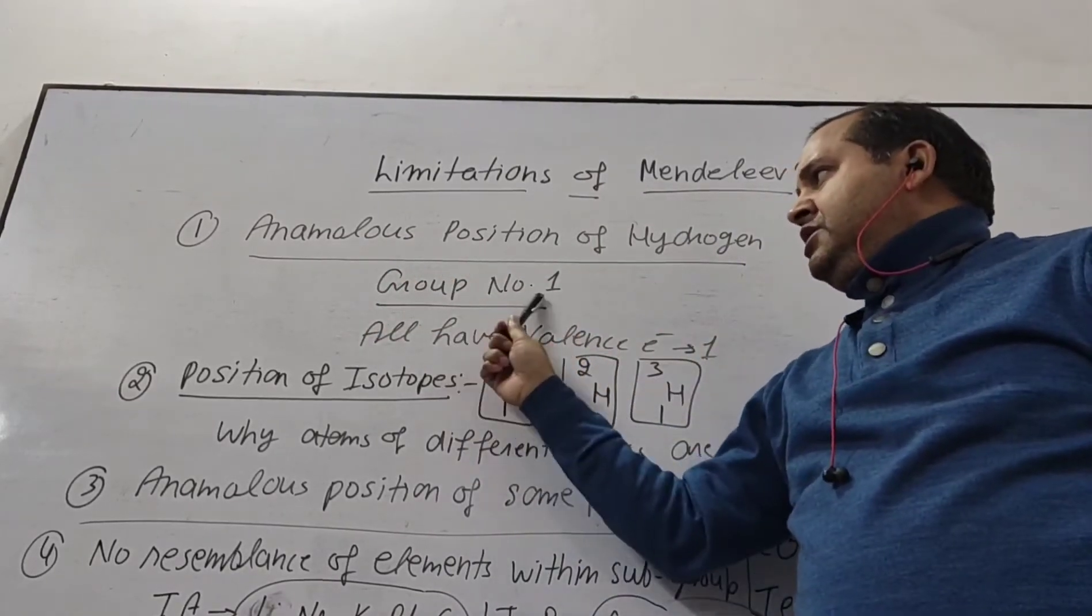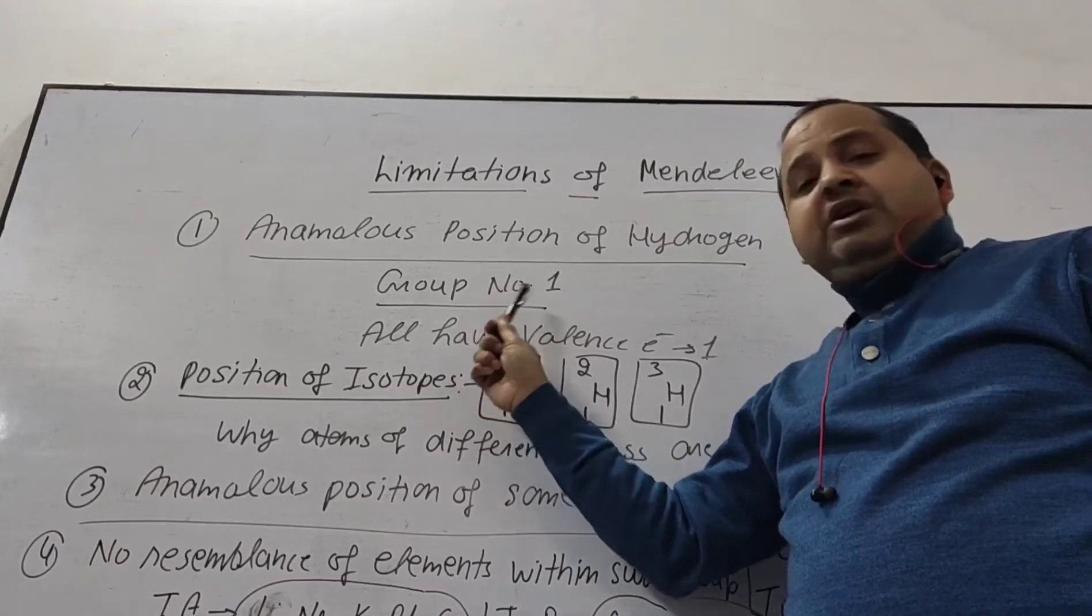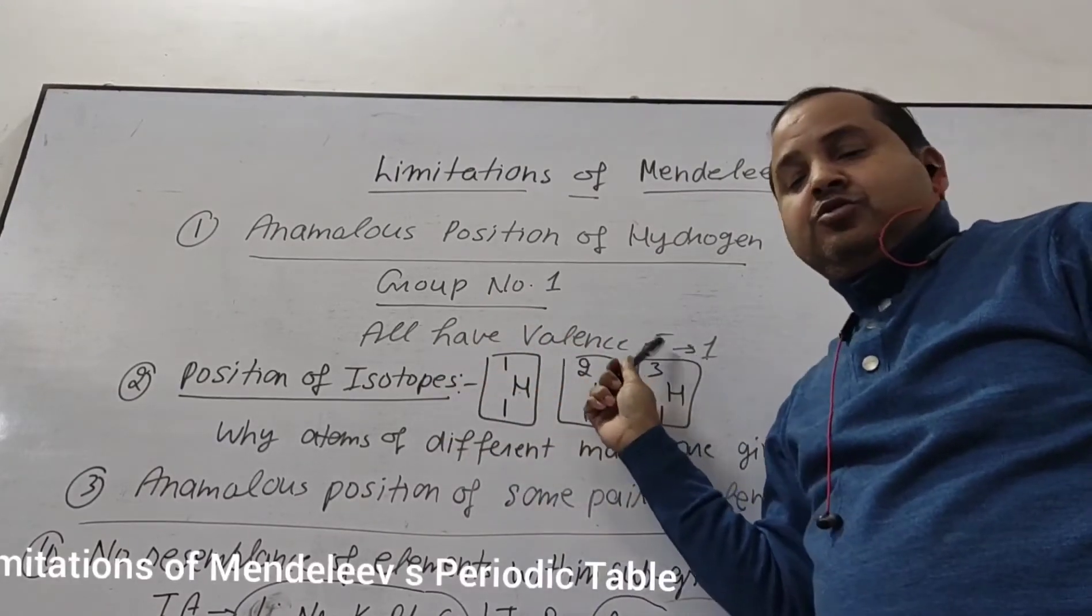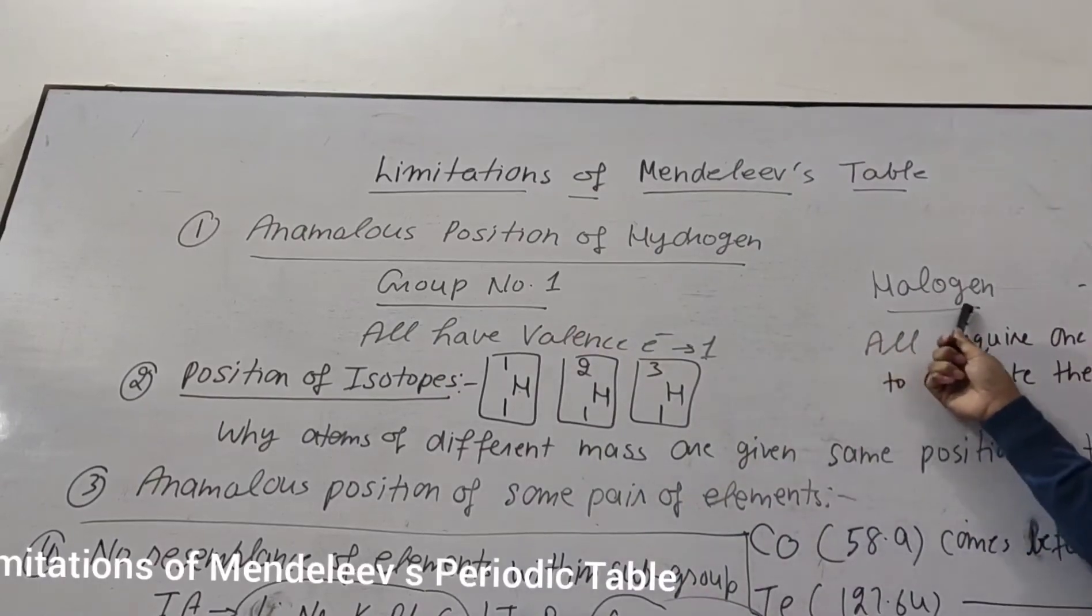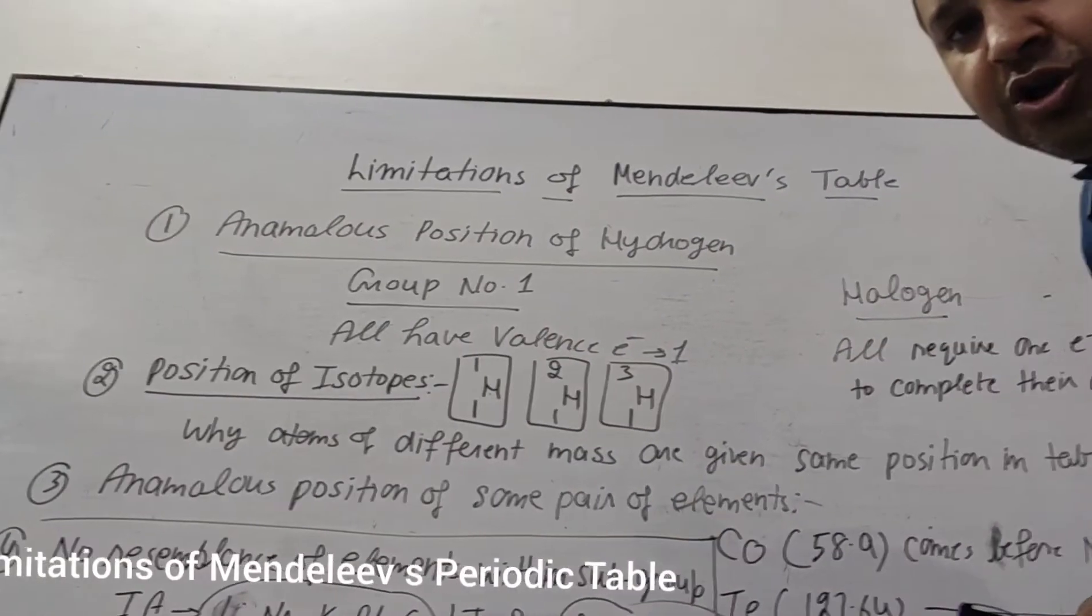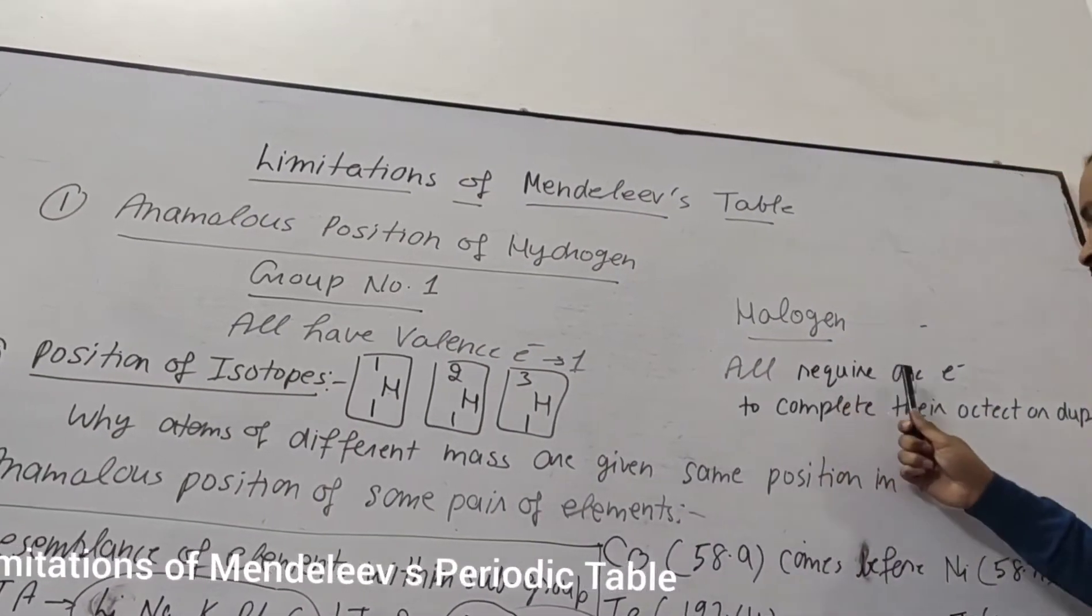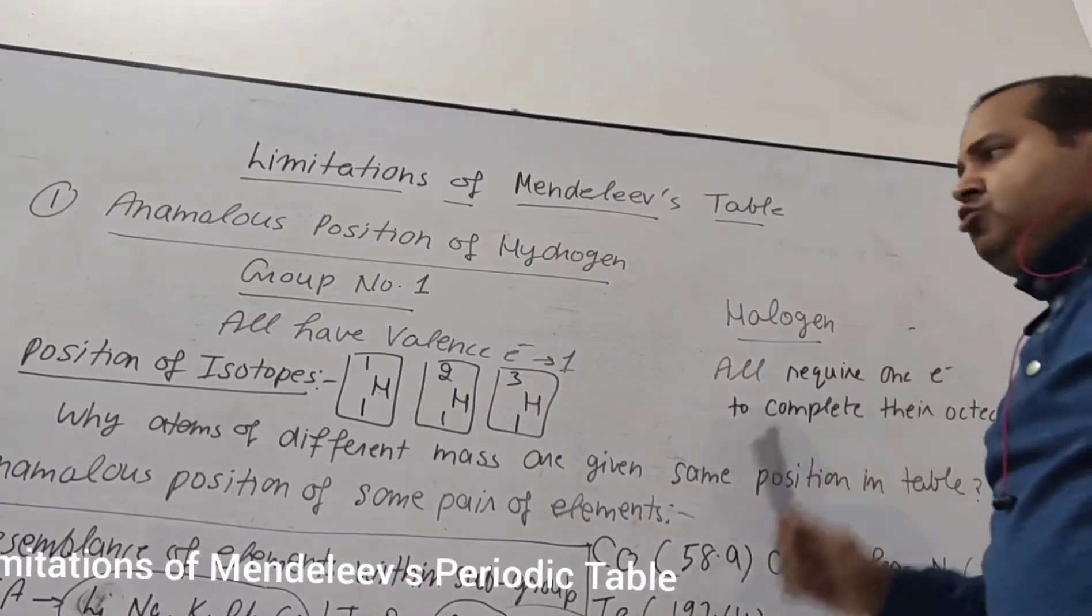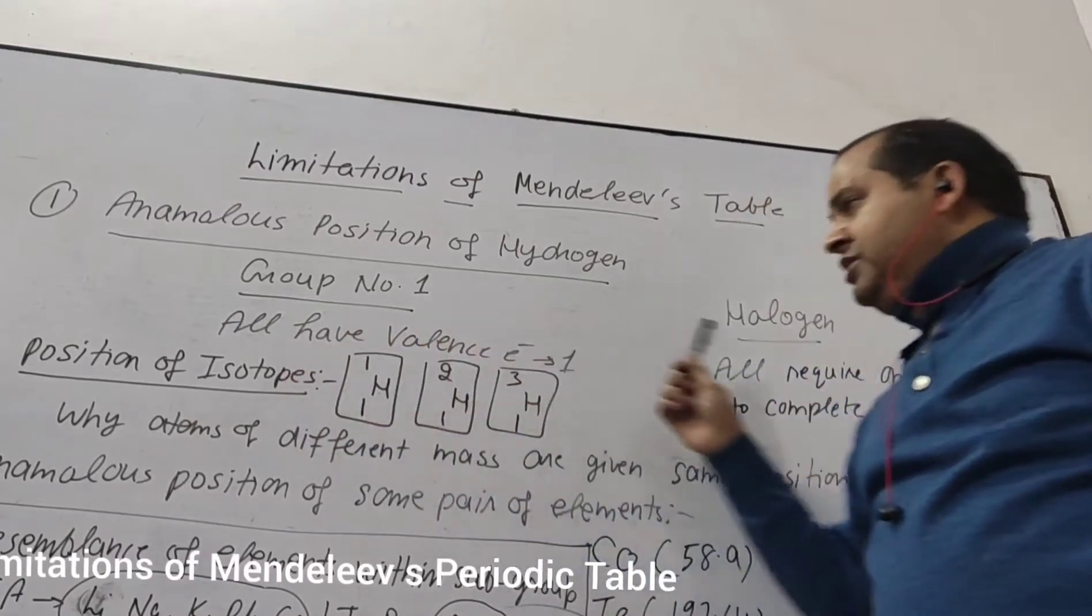Hydrogen is present in group number 1. We are given the position with group number 1 because all have one valence electron. But halogens on the other side also require one electron to complete their octet. So hydrogen has this property also. So where to keep it with group number 1 or with the halogen?